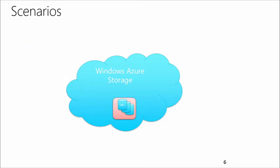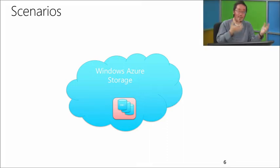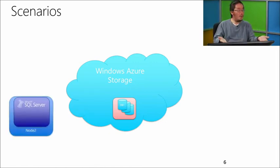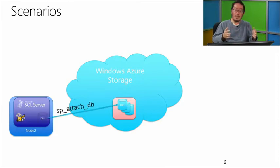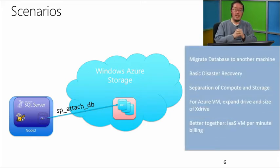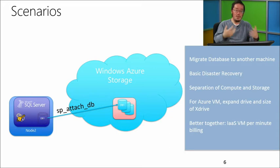Let's say something happens — a disaster occurs and that machine is gone. You can create a whole new instance on Node 2, install SQL Server, create the same credential, and then issue an attach command to the existing data on Windows Azure storage. It's back up and running — your SQL Server is available in production relatively quickly. As soon as you can set up that instance, you can attach it and you're back to where you were before.